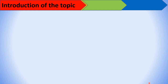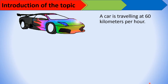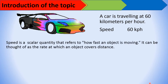Introduction of the topic: there's a car traveling at 60 kilometers per hour — that's its speed, or how fast it's moving, 60 kph. Speed is described as a scalar quantity that refers to how fast an object is moving. Scalar means you only measure the magnitude — how fast, how big, how long. Speed is a scalar quantity because when there's direction, that's already velocity. We will just be concentrating on speed.